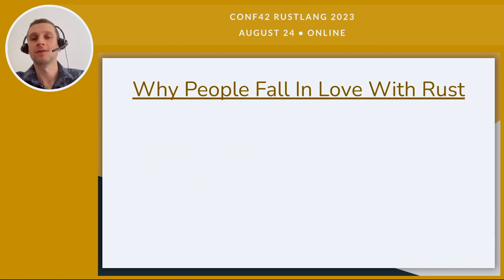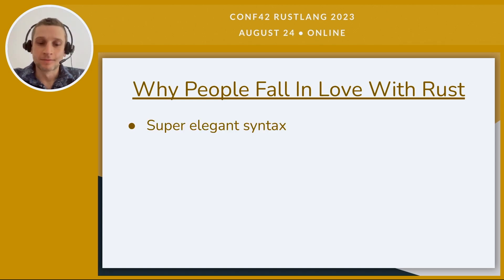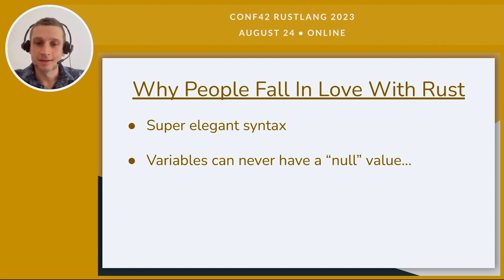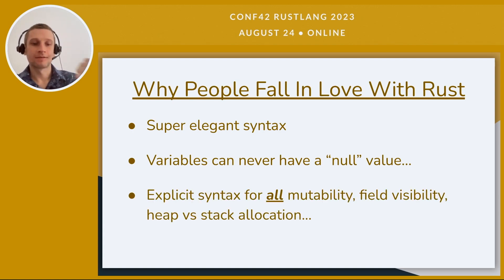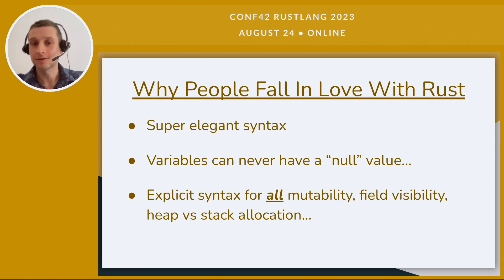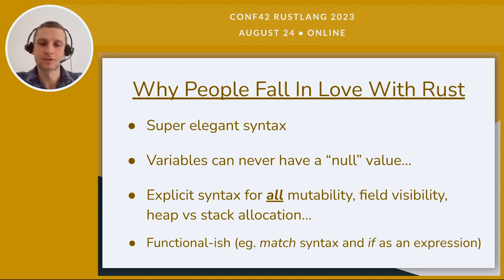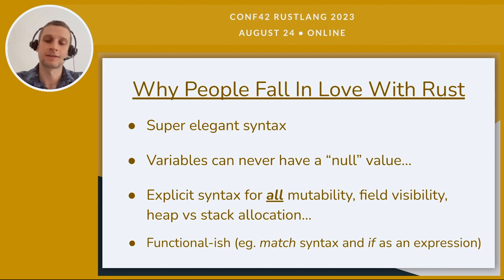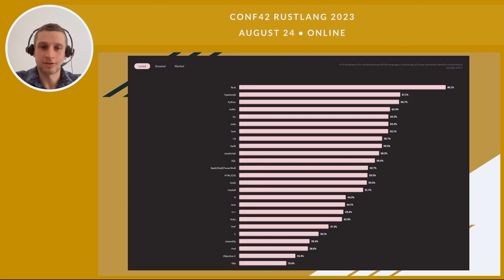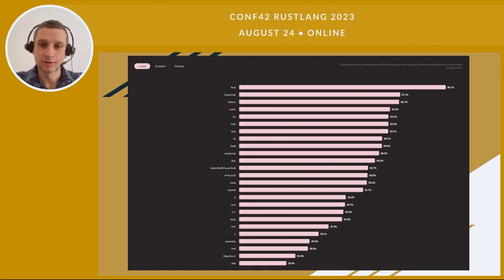Once people start using Rust, why do they end up falling in love with it? Usually, the super elegant syntax — just the fact that variables can never have a null value. You have explicit syntax for mutability, fields, visibility, heap versus stack allocation, and it has a very functional-ish feeling syntax. Just the match syntax and how if is an expression. Here's a chart that Rust developers love to show — the GitHub most loved programming languages — and we can see Rust at the very top, number one, by a pretty large margin.